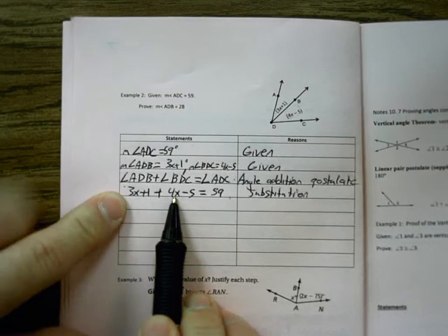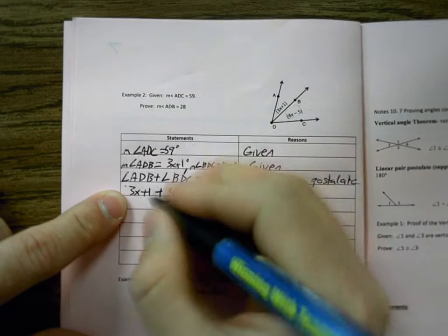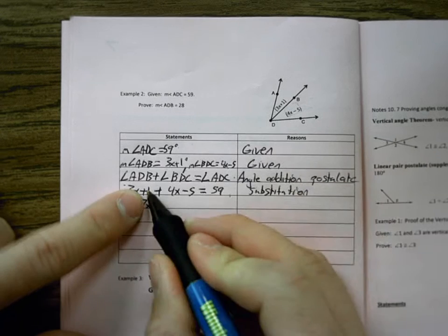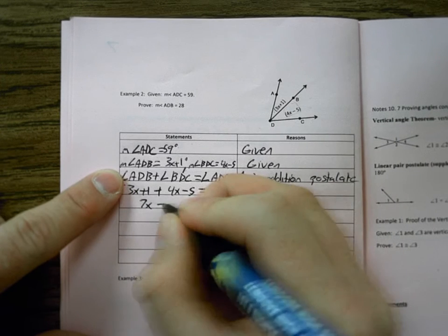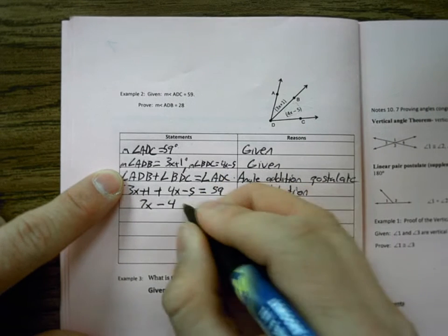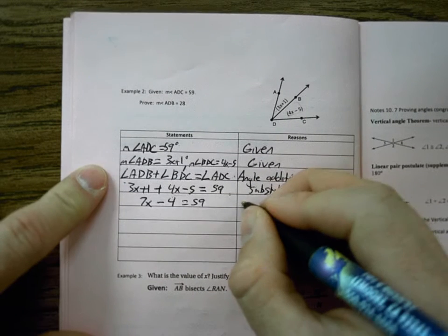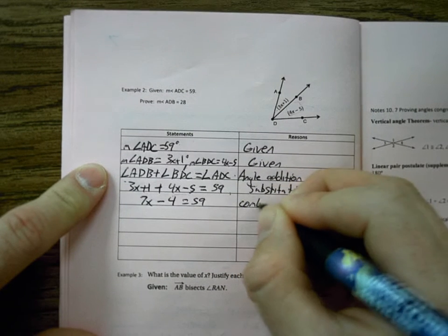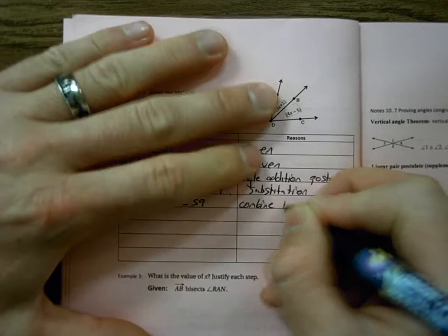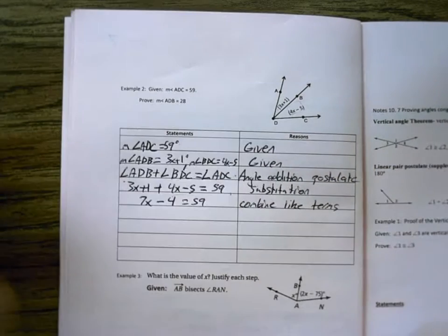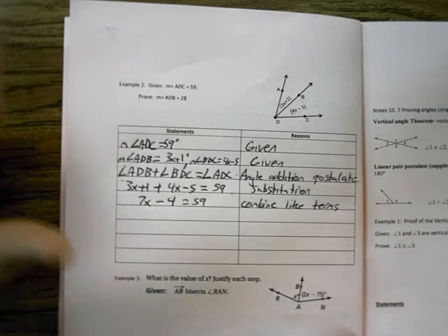My first step, I have X's on the same side. So 3X and 4X is 7X. 1 and a negative 5 is a negative 4 with a 59. That right there was combined like terms. Remember if the variables are on the same side, that's combining like terms.